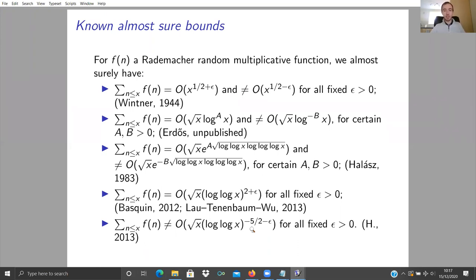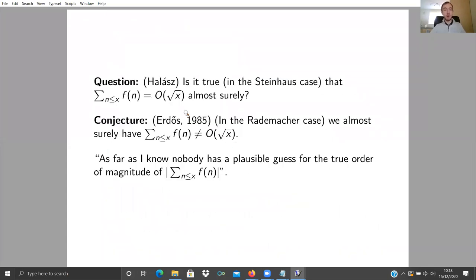The thing to notice about all these bounds is that the lower bounds are all smaller than sqrt(x) — none grow as fast as sqrt(x). That seems quite strange to a number theorist, as we don't usually expect to see consistently smaller-than-square-root fluctuations. Halász asked whether these sums might be Omega(sqrt(x)) almost surely. On the other hand, Erdős conjectured that almost surely the sum should not be Omega(sqrt(x)). Erdős also said that as far as he knew, nobody had a plausible guess for the real order of magnitude.